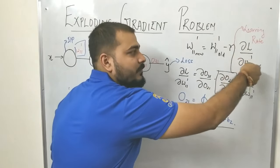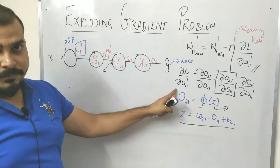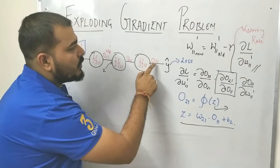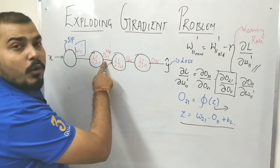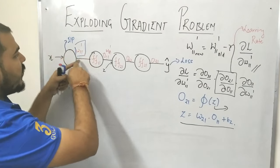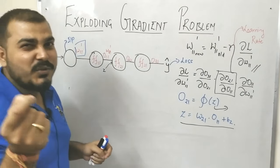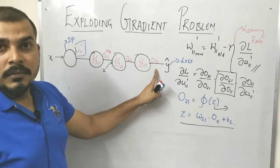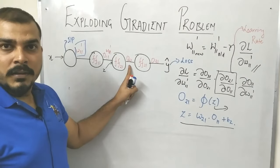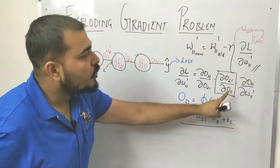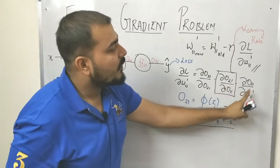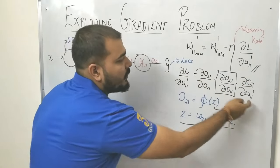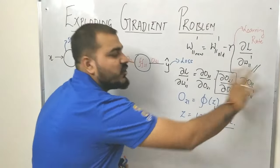A very important question: when does the exploding gradient problem happen? It happens in this particular problem. When I'm calculating the derivative of loss with respect to w11, using the chain rule I can write: my output o31 is dependent on o21, o21 is impacted by o11, and o11 is impacted by w11. So the chain rule gives: (dL/dw11) = (do31/do21) × (do21/do11) × (do11/dw11). If you cancel terms, this becomes do31/dw11 — a simple chain rule.